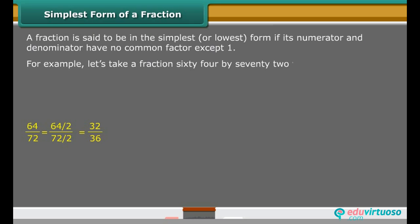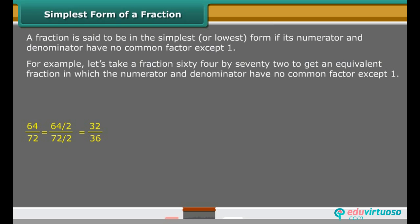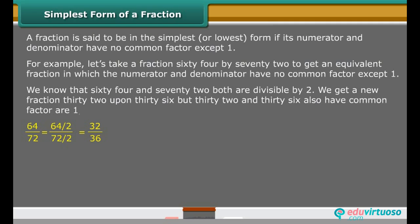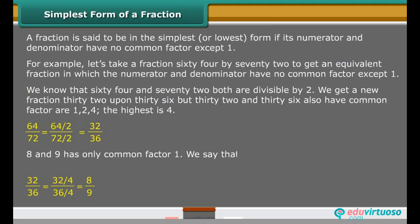A fraction is said to be in the simplest or lowest form if its numerator and denominator have no common factor except 1. For example, let us take a fraction 64 by 72. To get an equivalent fraction in which the numerator and denominator have no common factor except 1, we know that 64 and 72 both are divisible by 2. We get a new fraction 32 upon 36. But 32 and 36 also have common factors 1, 2, and 4. The highest is 4. 8 and 9 has only common factor 1. We say that the fraction 8 upon 9 is the simplest form of 64 upon 72.